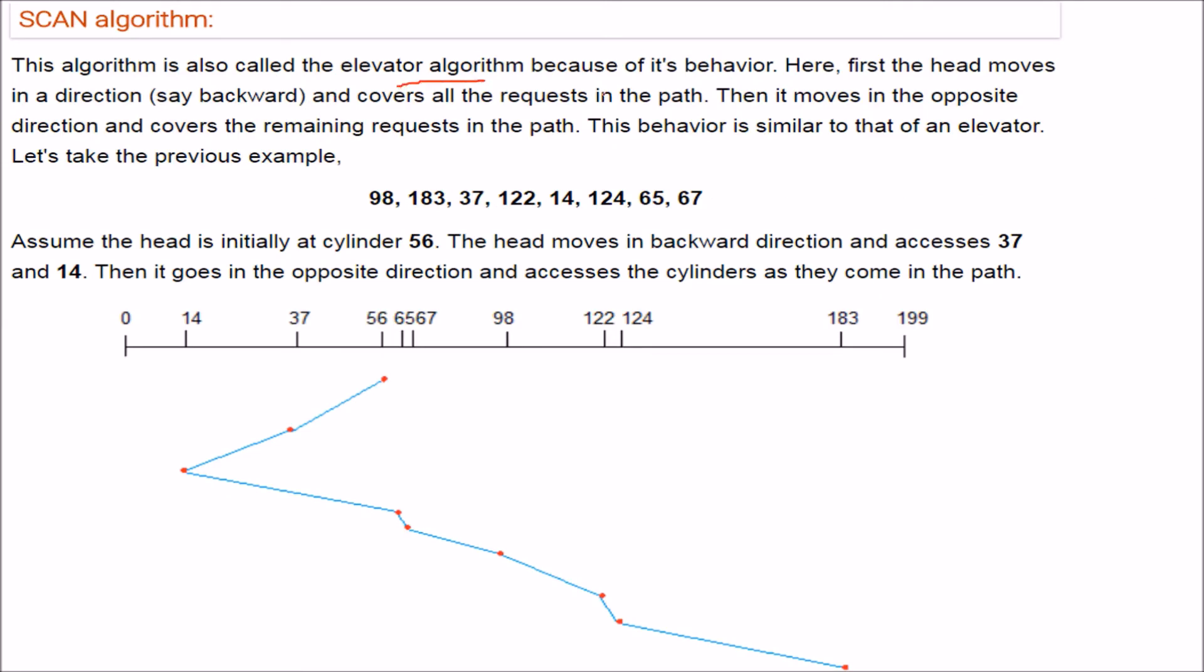Then we have one more algorithm, SCAN. This algorithm is also called the elevator algorithm because the behavior, you will see, is like an elevator. So what happens? First the head moves in the direction, say backward or forward. Let us assume it goes backward. It will cover all the requests in the backward path. Then it moves to the opposite direction.